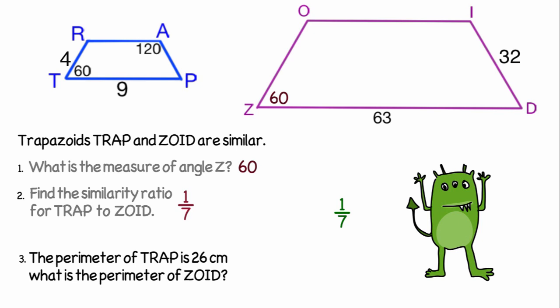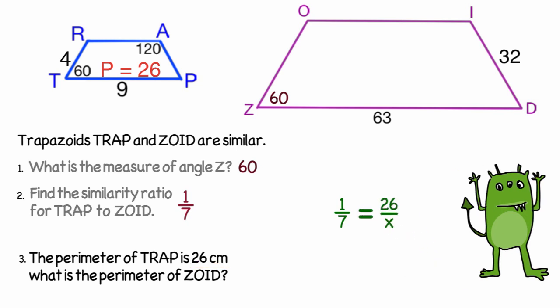Now we're going to find the perimeter of zoid. We know the perimeter of trap is 26 centimeters, and since the ratio for the perimeter is the same as the ratio for the sides, we can set up the proportion. One-seventh equals 26 over x, which we simplify to x equals 7 times 26, which multiplies out to 182. So zoid has a perimeter of 182 centimeters.